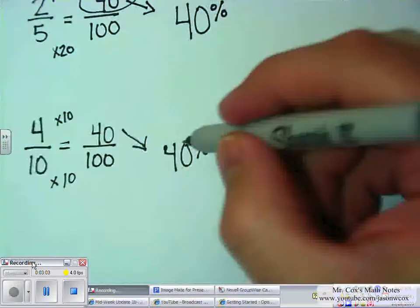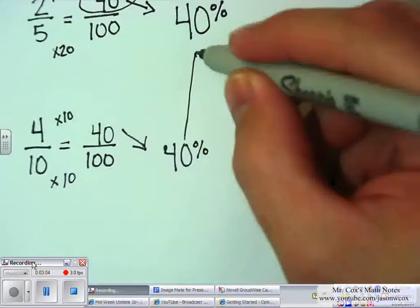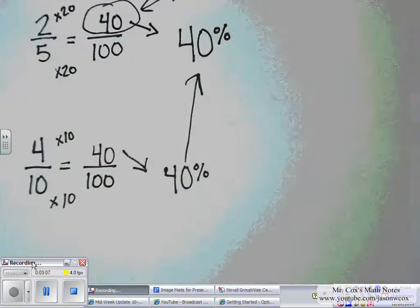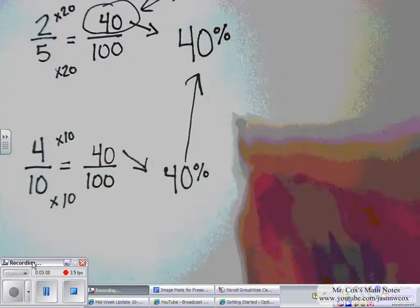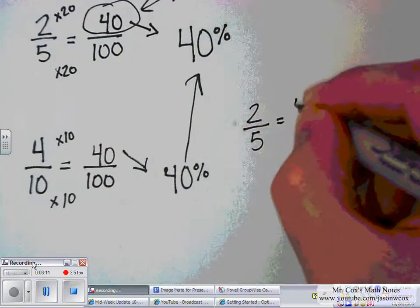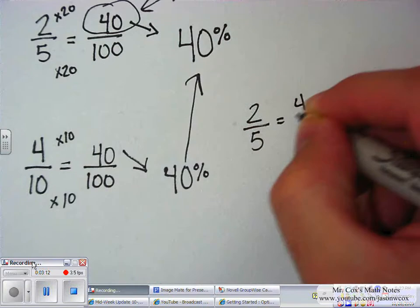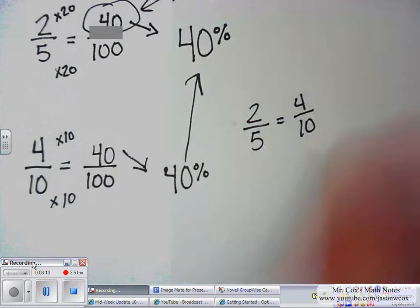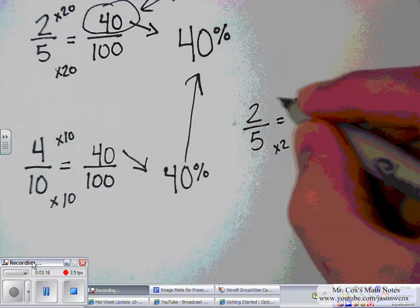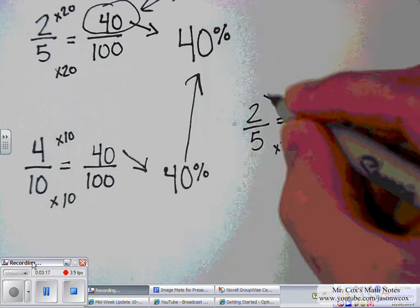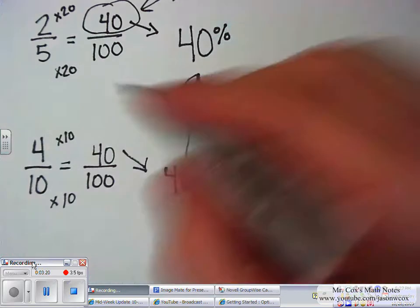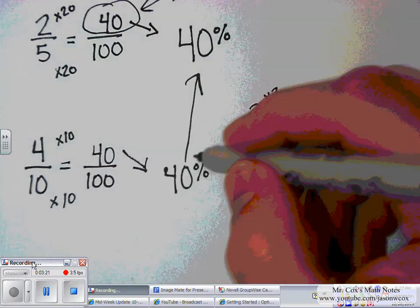Isn't that the same that I got up there? Let's see — is 2 fifths equal to 4 tenths? 5 times 2 is 10, and 2 times 2 is 4. So I've proved it a couple of ways there.